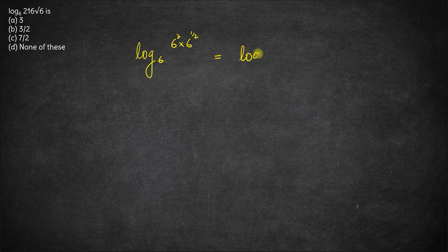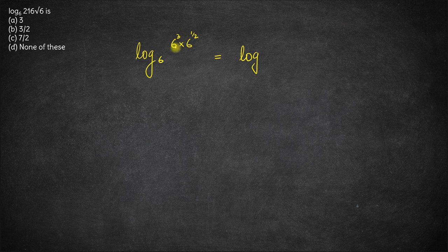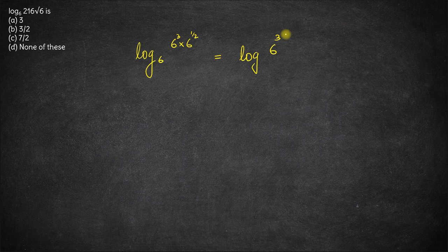This is equal to log of... now since two numbers are getting multiplied and their bases are equal, their powers will get added. So this becomes 6 raised to the power 3 plus a half, which is 3 and a half, base 6.